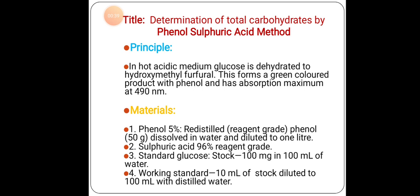Materials: phenol 5% redistilled, reagent grade — 50 grams of phenol dissolved in water and diluted to 1 liter. Sulfuric acid, 96% redistilled. Standard glucose stock: 100 mg in 100 ml of water. Working standard: 10 ml of stock diluted to 100 ml with distilled water.